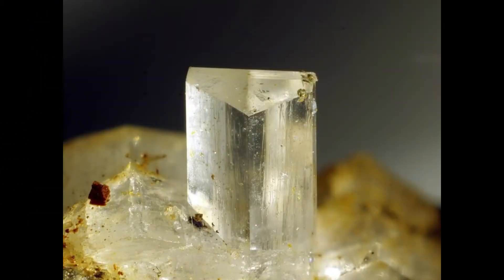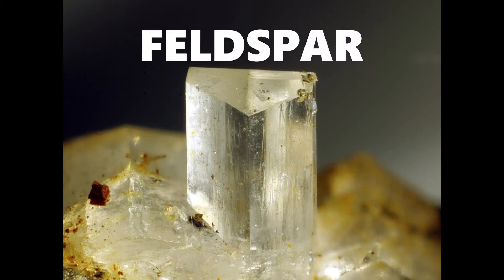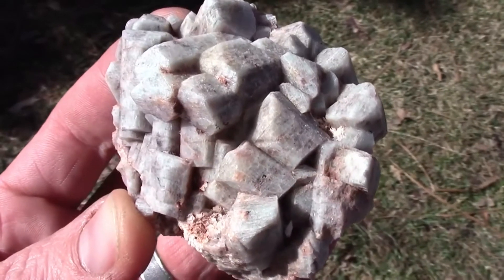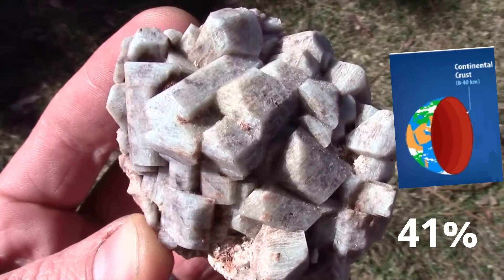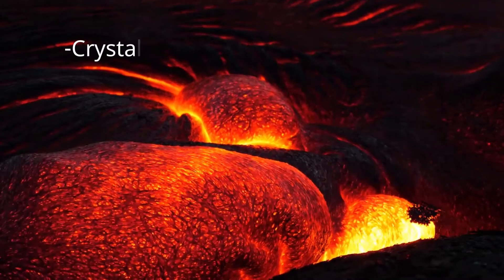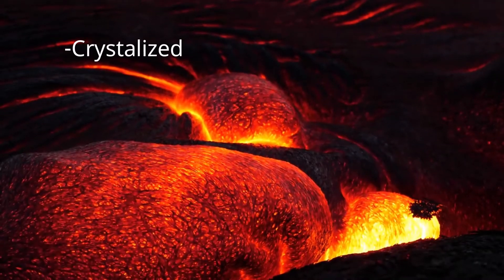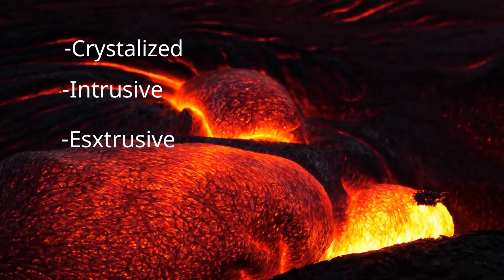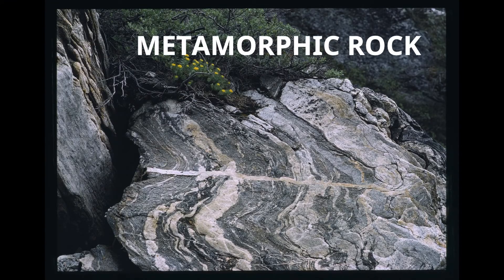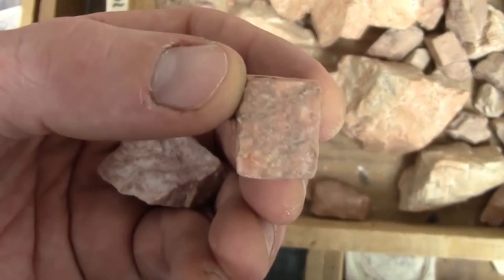Let's move on to the first mineral we're going to tackle: feldspar. Feldspars are a group of rock-forming tectosilicate minerals that make up about 41% of the earth's continental crust by weight. Feldspars crystallize from magmas, both intrusive and extrusive igneous rocks, and are also present in many types of metamorphic rock.